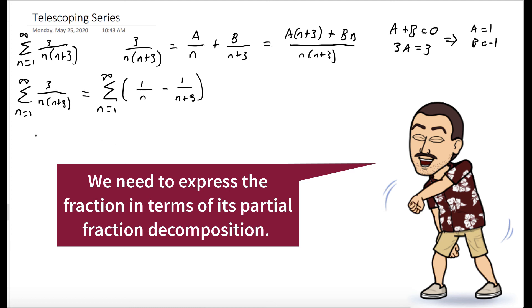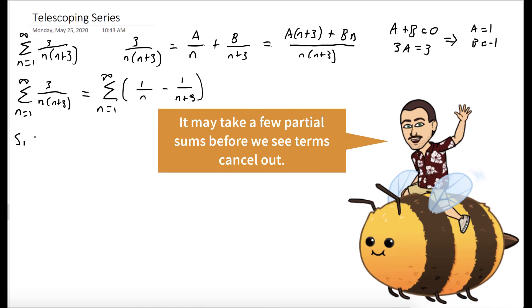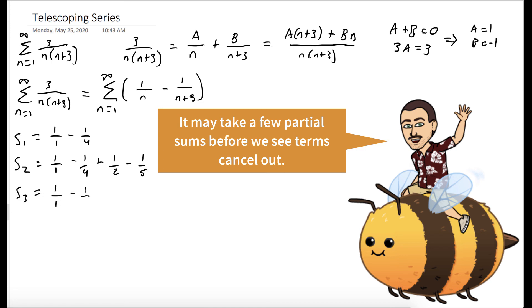Now the question is, does this converge? Let's look at a few of the partial sums. S1, the first partial sum, is 1 minus 1 fourth. S2 is 1 minus 1 fourth plus 1 half minus 1 fifth. So at this point, nothing has canceled. Hopefully down the line, terms will eventually cancel. S3 is 1 minus 1 fourth plus 1 half minus 1 fifth plus 1 third minus 1 sixth. Still nothing's canceling, but that's okay.